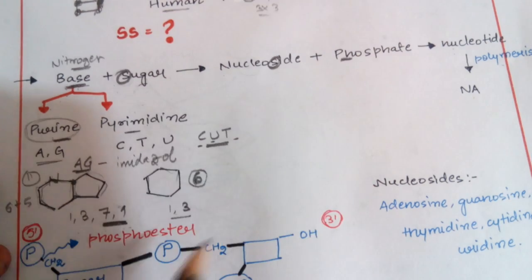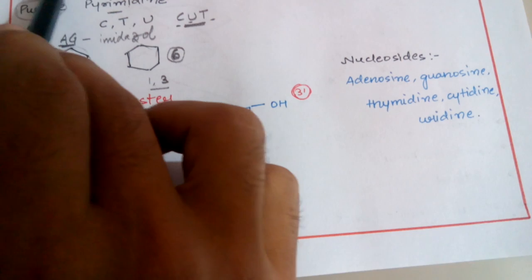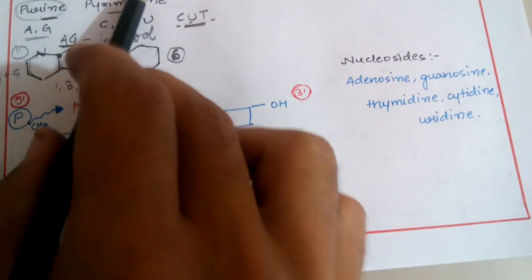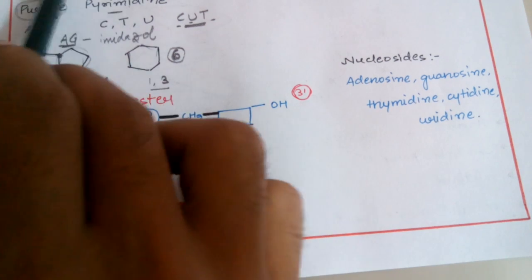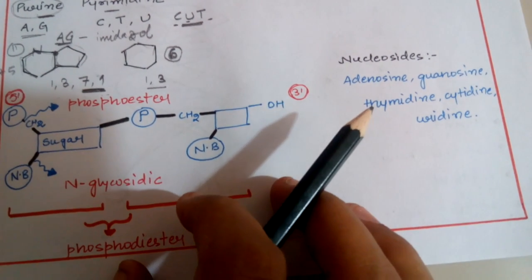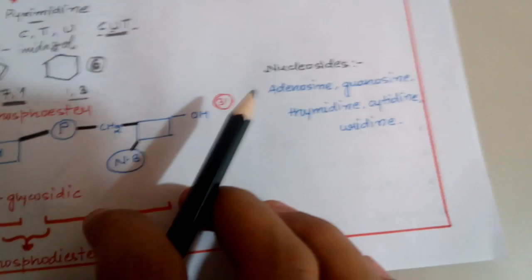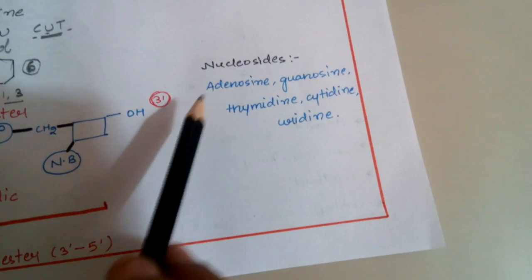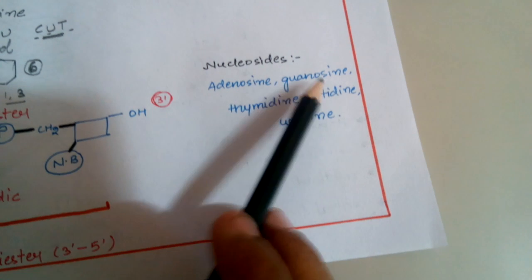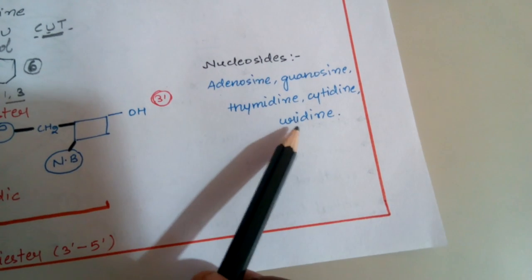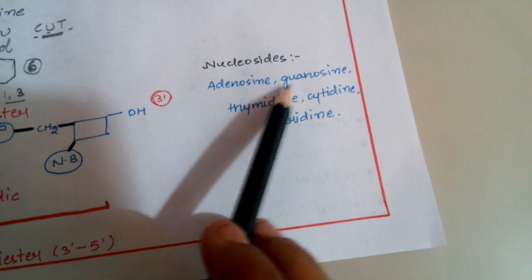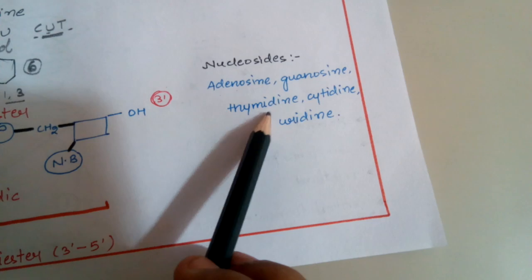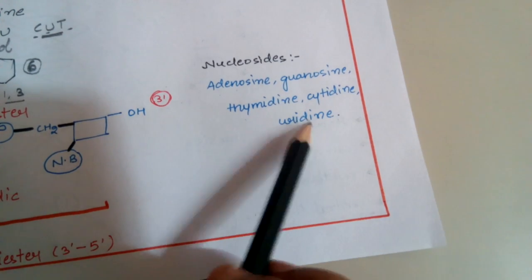When sugar is ribose, the nitrogenous bases form the following nucleosides: Adenine → Adenosine, Guanine → Guanosine, Thymine → Thymidine, Cytosine → Cytidine, Uracil → Uridine. When the sugar is deoxyribose, the prefix 'deoxy' is added: Deoxy-adenosine, Deoxy-guanosine, Deoxy-thymidine, Deoxy-cytidine, and Deoxy-uridine. These interact with phosphate via a phosphoester bond to form nucleotides.